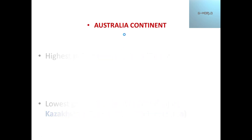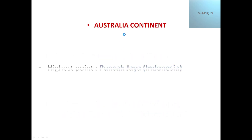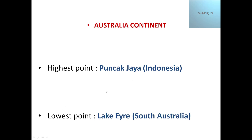The highest point of Australia is Puncak Jaya, which is located in Indonesia. The lowest point is Lake Eyre, which is located in Australia.